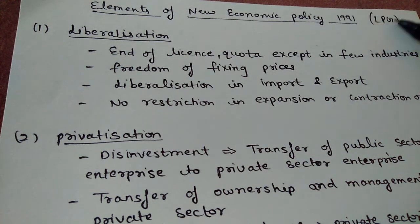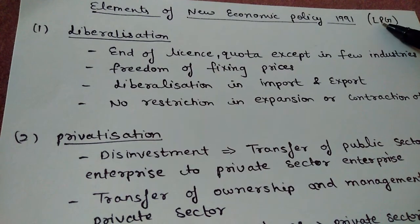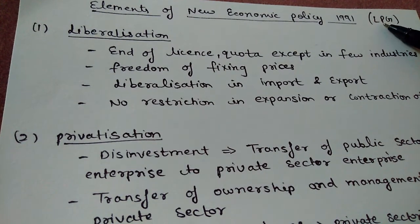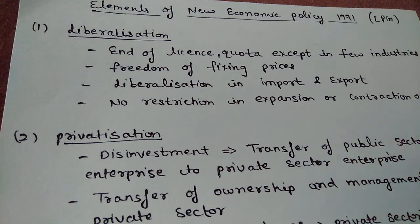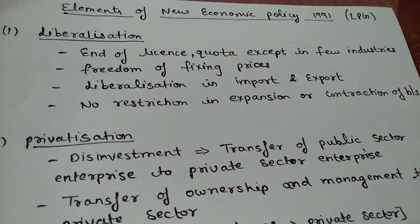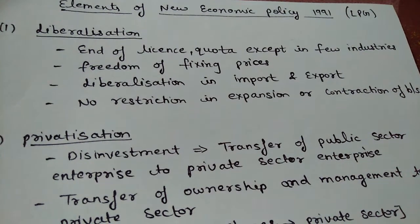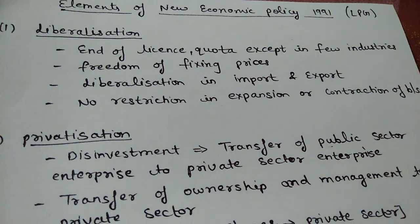Now we will study the elements or components of NEP. The main model used is LPG. L stands for Liberalization, P stands for Privatization, and G stands for Globalization. Liberalization essentially means freedom — freedom from excessive controls and restrictions.